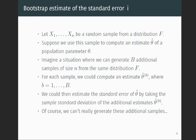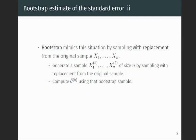Bootstrap tries to mimic this situation by sampling with replacement from the original sample — creating new samples coming from the same distribution by resampling from the original data. We generate a sample x1b up to xnb of size n by sampling with replacement, so some observations will appear more than once. For each resample we compute theta hat b, getting essentially samples from the sampling distribution. We can then compute quantities of interest like standard error and bias. This is the main idea of Bootstrap: mimicking the situation where we're actually able to go back and sample new datasets.